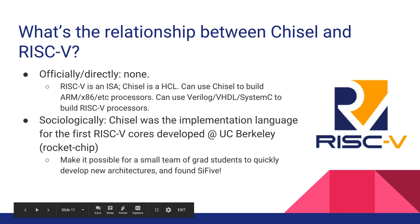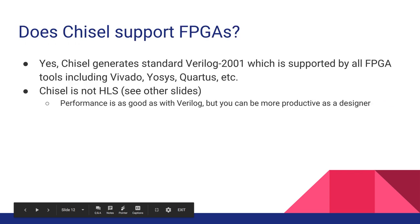Chisel and RISC-V: RISC-V is an ISA — a description of the way things should work. Chisel is a way of building things. You can use Chisel to build processors, in particular processors that use the RISC-V ISA. Chisel's development was spurred largely by the effort at Berkeley to create RISC-V chips. It has been proven able to produce good, big chips with very small teams.